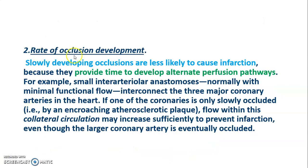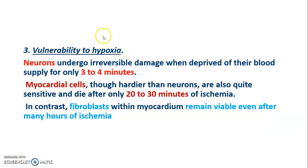The second factor is rate of occlusion development. Slowly developing occlusions are less likely to cause infarction because they allow time to develop alternate perfusion pathways. Regarding vulnerability to hypoxia: neurons undergo irreversible damage when deprived of blood supply for only 3 to 4 minutes, while myocardial cells die after only 20 to 30 minutes of ischemia. In contrast, fibroblasts within the myocardium remain viable even after many hours of ischemia.